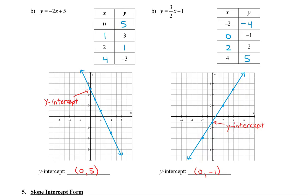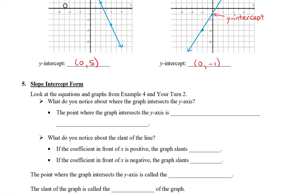In the second one, it's (0, -1). And then what you'll notice is that the y-intercept is actually the same as the constant value in both of those equations. So the point where the graph intersects the y-axis is the same as the constant number in the equation.